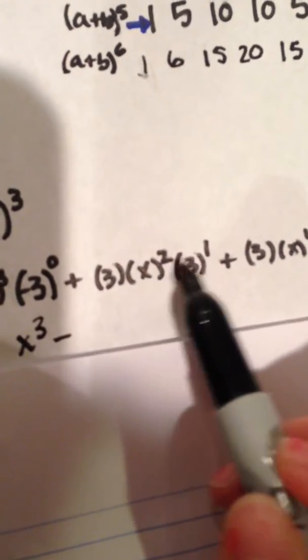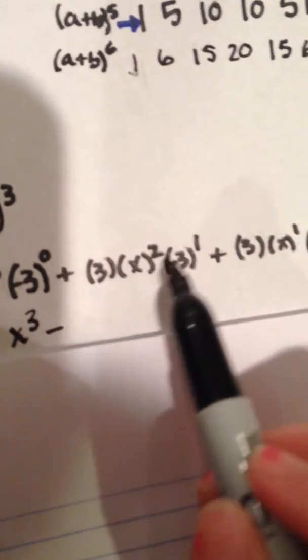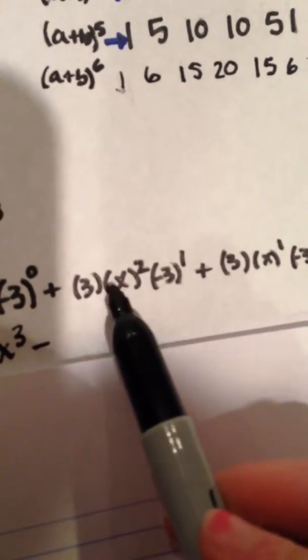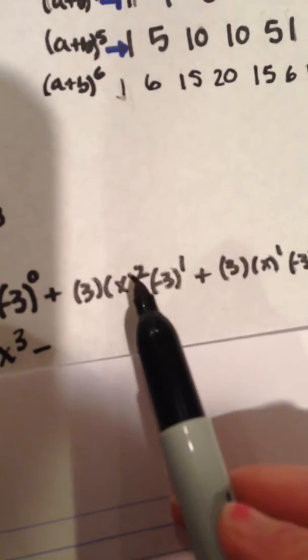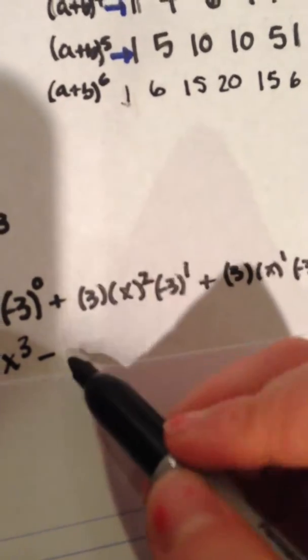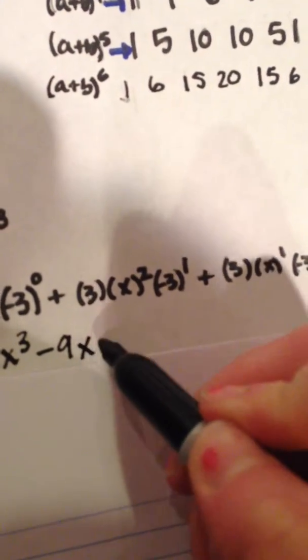We're multiplying it by three, and our exponents are two and one in their decreasing and increasing order. So we end up with three x to the second power times negative three, which is negative nine x squared.